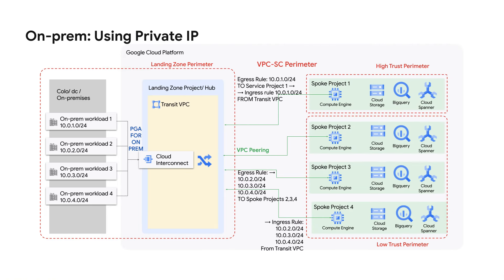Luckily, with private IP, the landing zone no longer needs to be in a specific perimeter. Instead, the private IPs of specific workloads on-prem can be allow-listed in. Here's an example where I've segmented my environment into high and low trust perimeters. I can then allow-list specific private ranges from on-prem via the landing zone VPC. Note, I've still got on-prem in a perimeter, because I don't want workloads on-prem to be able to exfil data out via managed services.